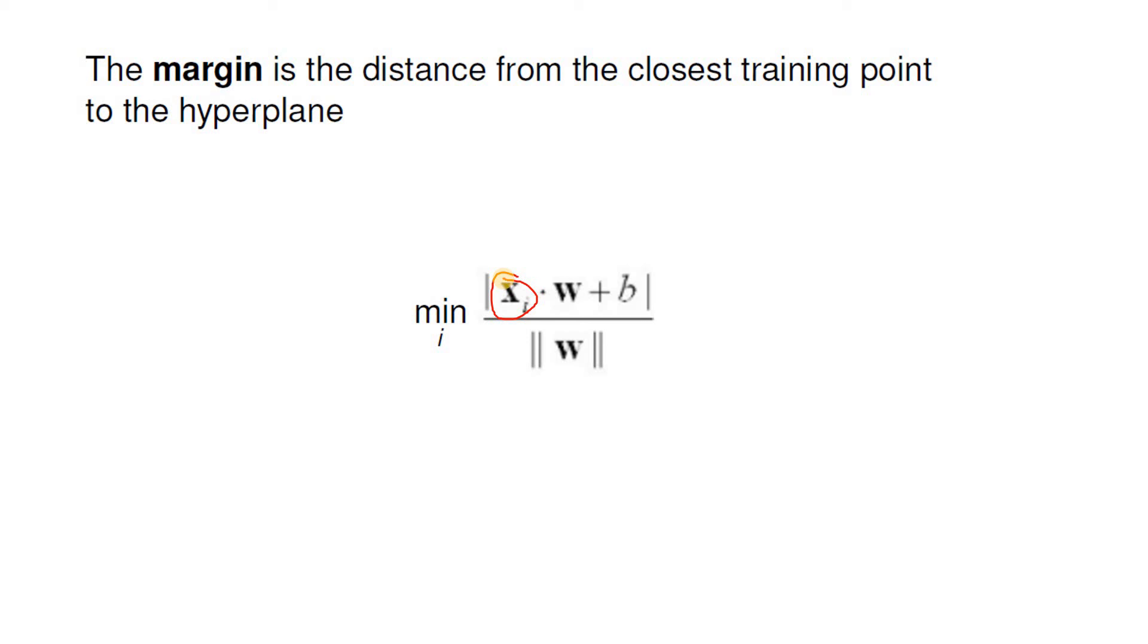Sometimes you might see the same equation like this. No need to confuse, just the same equation, but sometimes b is also represented by w_naught. So this one is basically the margin formula.